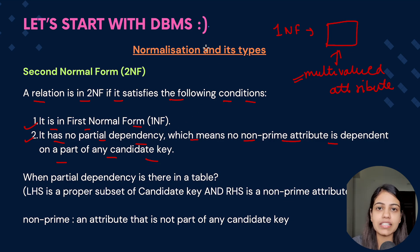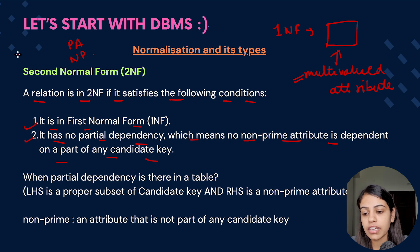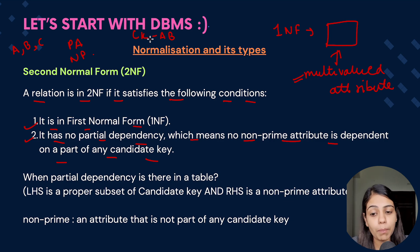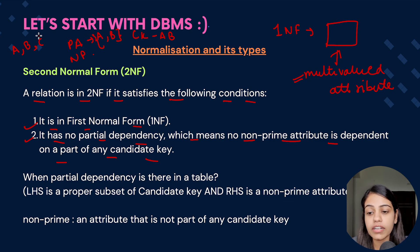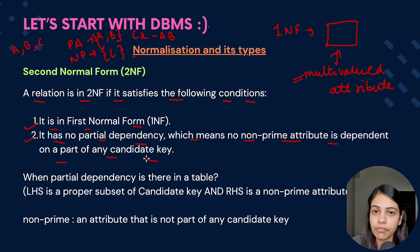A candidate key is basically a unique identifier which helps us to uniquely identify records in a table. Now, what is a non-prime attribute? Consider that in a given table there are three attributes A, B, and C, and A, B is our candidate key. The attributes which are part of the candidate key lie in the prime attributes, and the attributes which are not part of the candidate key lie in the non-prime attributes. According to this, there shouldn't be any non-prime attribute that is dependent on any part of a candidate key.